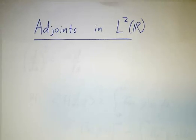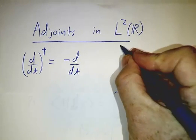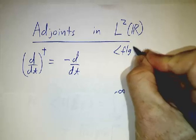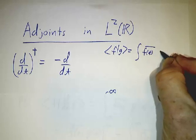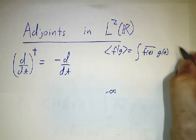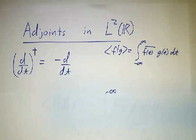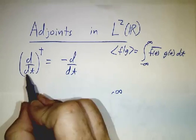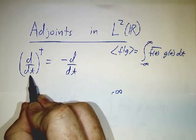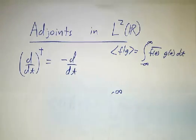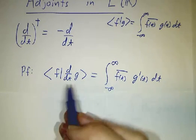So these are functions on the real line where we take the inner product of two functions defined to be the integral of the first conjugated times the second, and we're integrating from minus infinity to infinity. And our operator that we want to look at is just the derivative operator. And I claim that the adjoint of the derivative operator is minus the derivative operator. The way to see that is integration by parts.